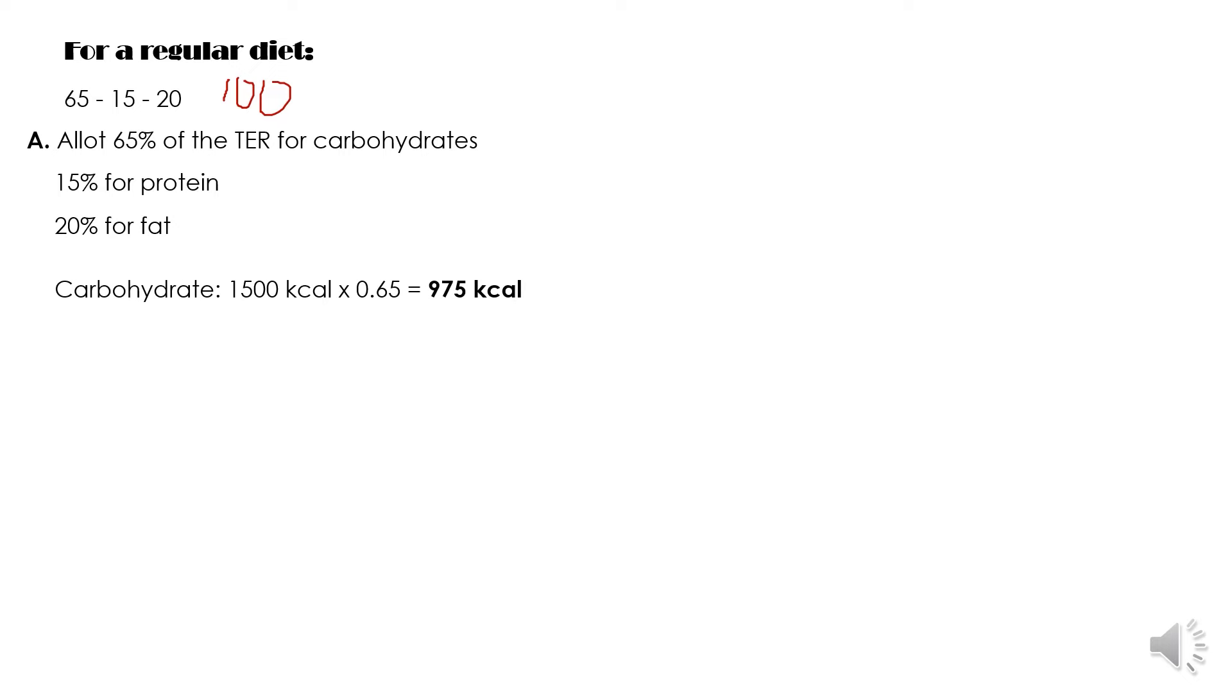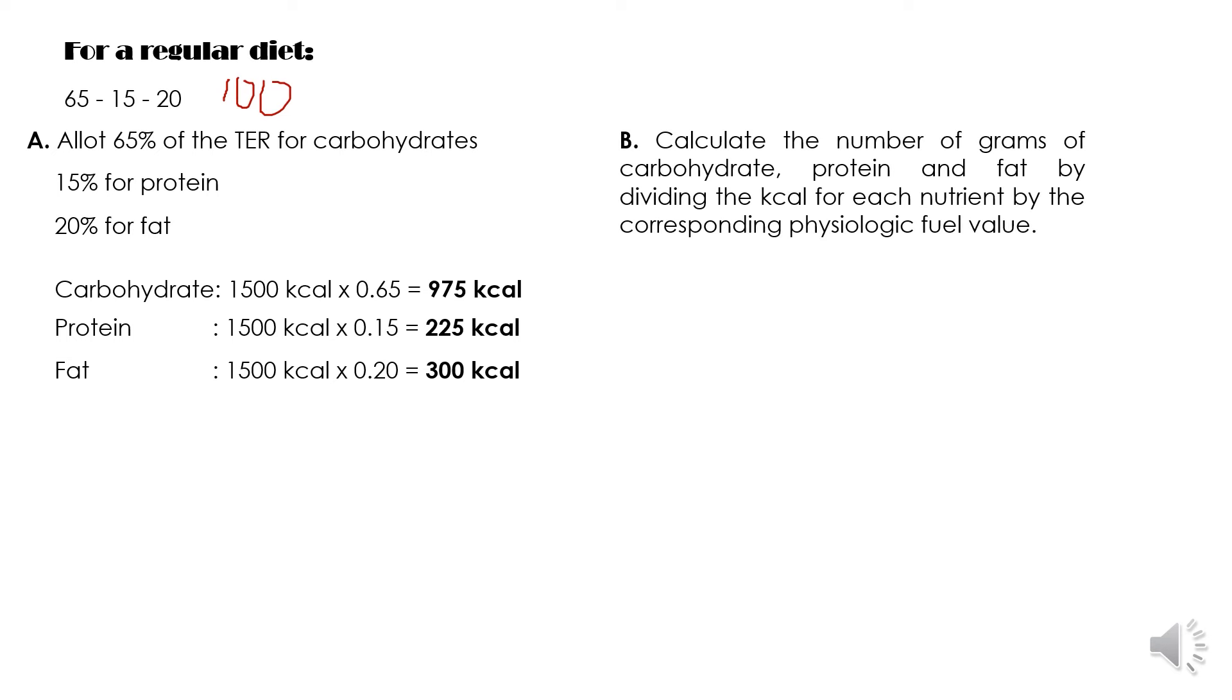Which means that I will allot 65% of the total energy requirement for carbohydrates, 15% for protein, 20% for fat. Let's proceed to the computation: carbohydrate 1500 kilocalories times 0.65 equals 975 kilocalories; protein 1500 kilocalories multiplied by 0.15 equals 225 kilocalories; for the fat 1500 kilocalories times 0.20 equals 300 kilocalories.